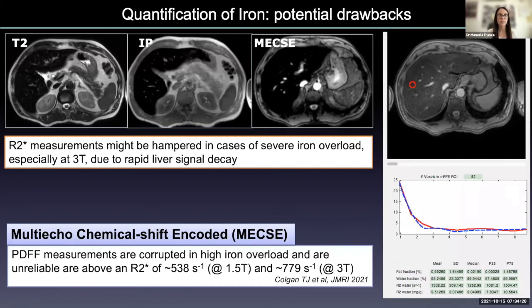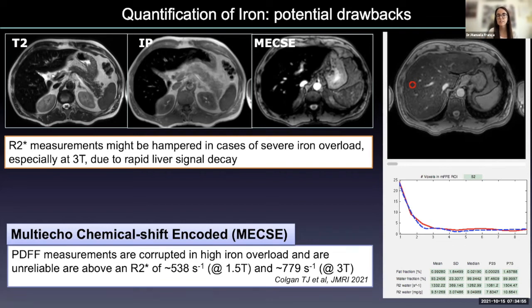Another potential drawback when using multi-echo chemical shift encoded sequences for simultaneous quantification of fat and iron is also in the scenario of severe iron overload. When there is severe iron overload, the PDFF measurements will be corrupted because the signal decay will be very fast and the oscillations between the fat and water signals will be lost, impairing PDFF quantification.